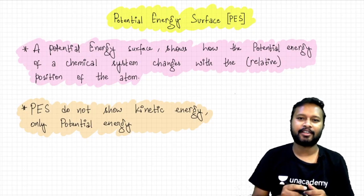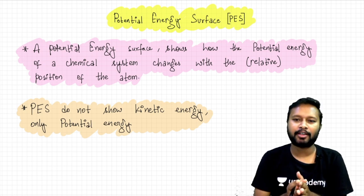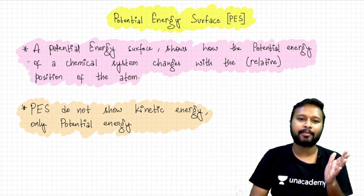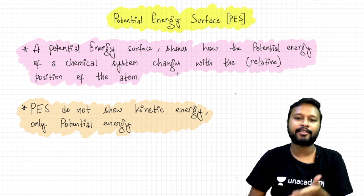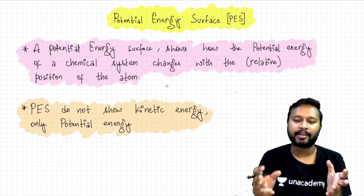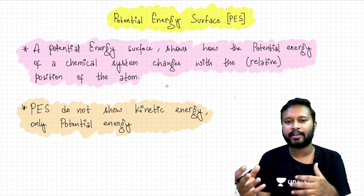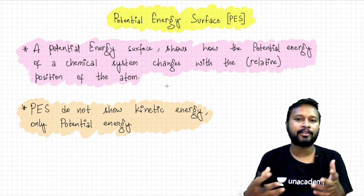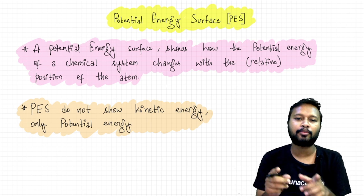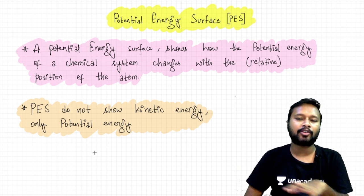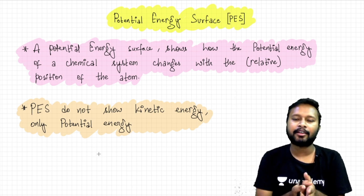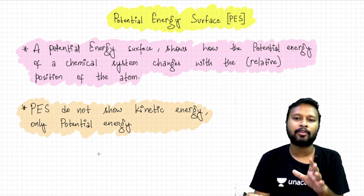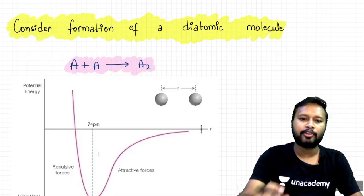Let's talk about potential energy surface first, then we'll understand saddle point, because both topics are related to each other. A potential energy surface, as the name suggests, shows how the potential energy of a chemical system changes with the relative position of atoms. It's about a chemical reaction — how the potential energy changes as atoms come closer or move away. It only talks about potential energy, not kinetic energy.